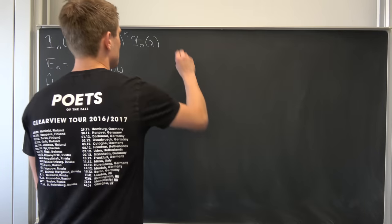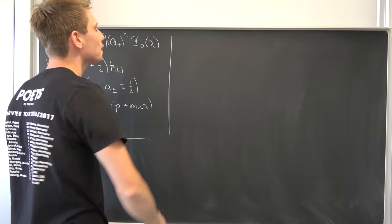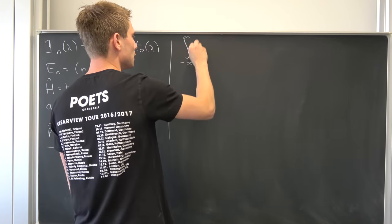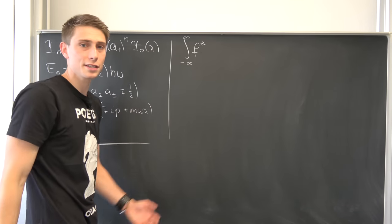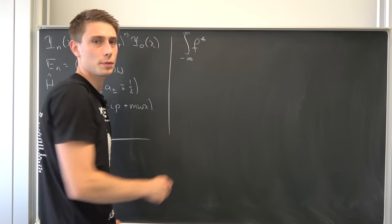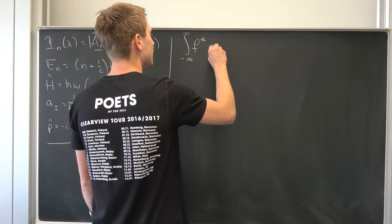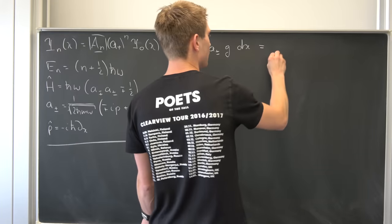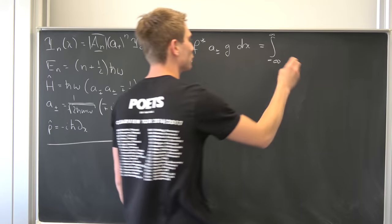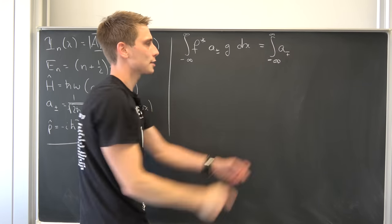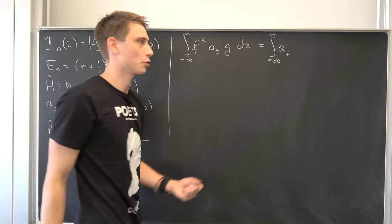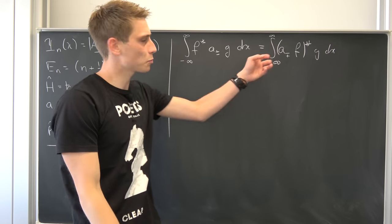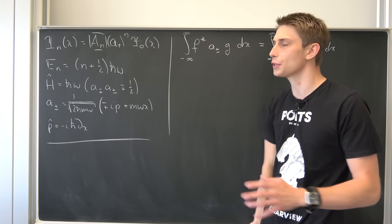So those are just some identities we are going to need. If we take the improper integral from minus infinity to infinity of some conjugate function f — just some normalizable, square-integrable wave function — and then a± times g, which is also just a wave function, dx, this is the same as saying we have the integral of a∓ (the Hermitian conjugate) applied to f, all conjugated, times g dx. That's what we want to show.